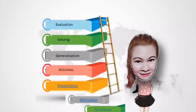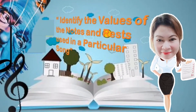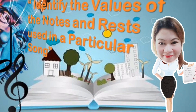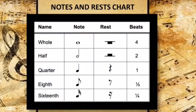You sing it very well! I guess you are now ready with our lesson today. Today, we are going to identify the values of the notes and rests used in a particular song. Notes and rests are musical symbols on a staff that denote the sound and silence in music. These are the different notes and rests with specific values or number of beats.